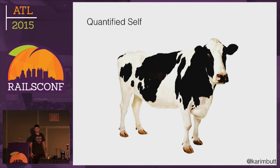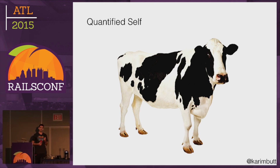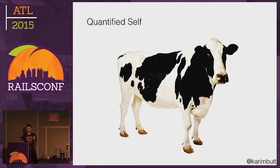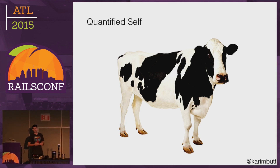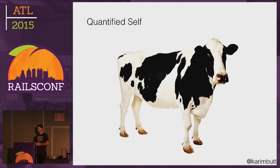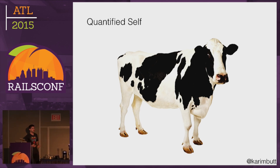Fun fact — I read about a Dutch startup that built sensors for cows. You stick these sensors on a cow and the farmer can get all this data: when the cow is eating, sleeping, pregnant, or sick. A cow generates 200 megabytes of data per year. If an animal that sleeps 12 and a half hours a day and eats for another 10 hours generates that much data, imagine how much data a human can generate — or even something like a car. There's just going to be so much data out there.